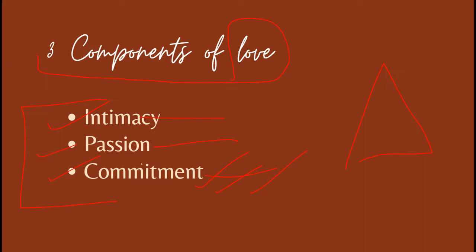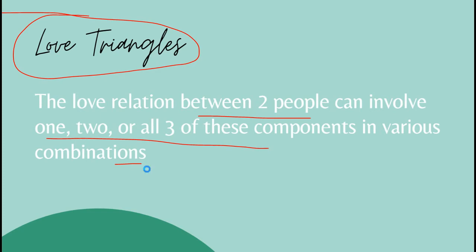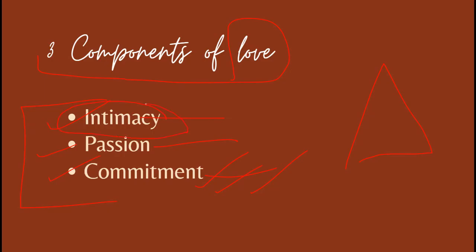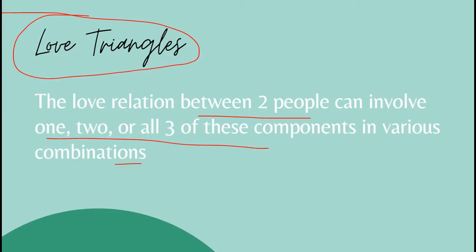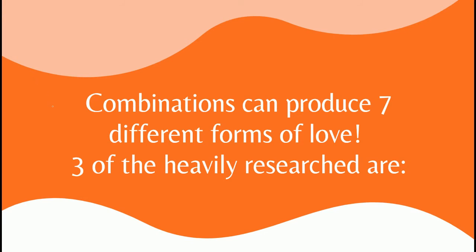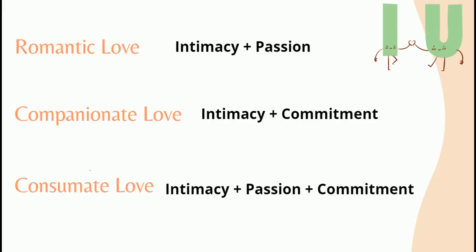The combination of these three components — intimacy, passion, and commitment — can produce seven different forms of love. Out of those seven different forms, there are three heavily researched and well-known types of love that we will discuss today: romantic love, companionate love, and consummate love. As you can see, I have already noted which components are involved in each type of love.